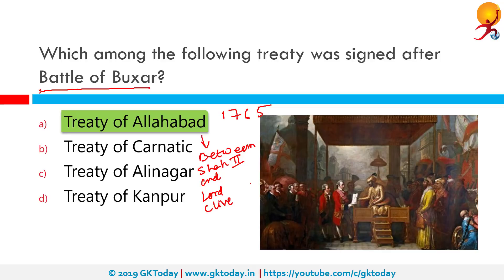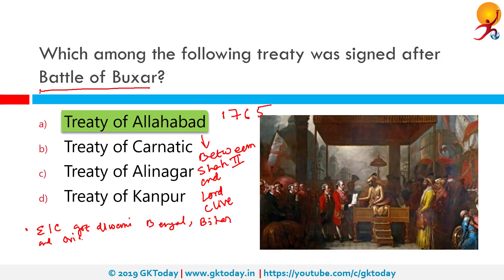As per this treaty, Mughal Emperor Shah Alam II submitted to the British and granted fiscal and administrative rights — the right to collect taxes — to the East India Company. Technically, the East India Company became the ruling entity and received the Diwani of Bengal, Bihar, and Orissa.